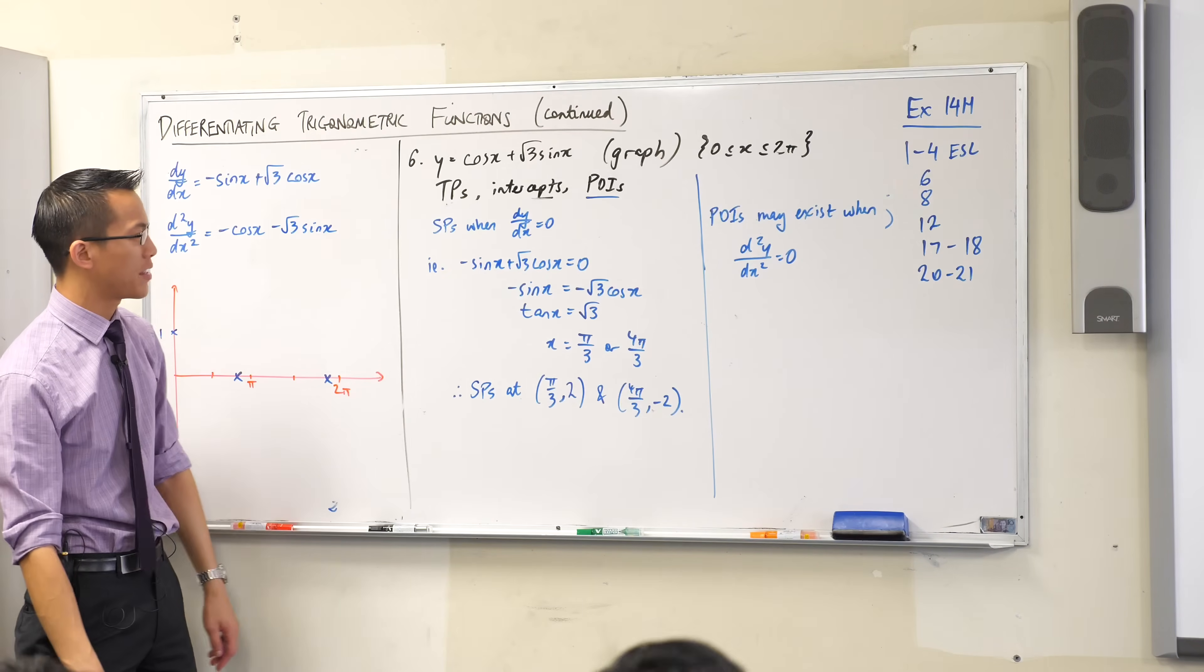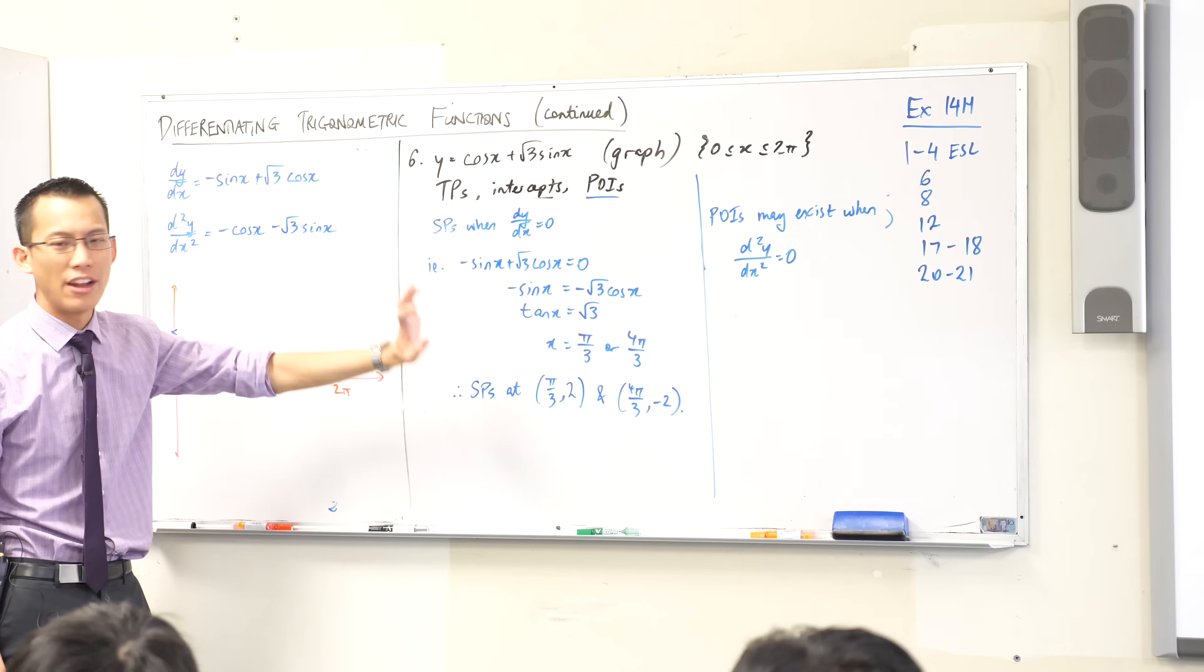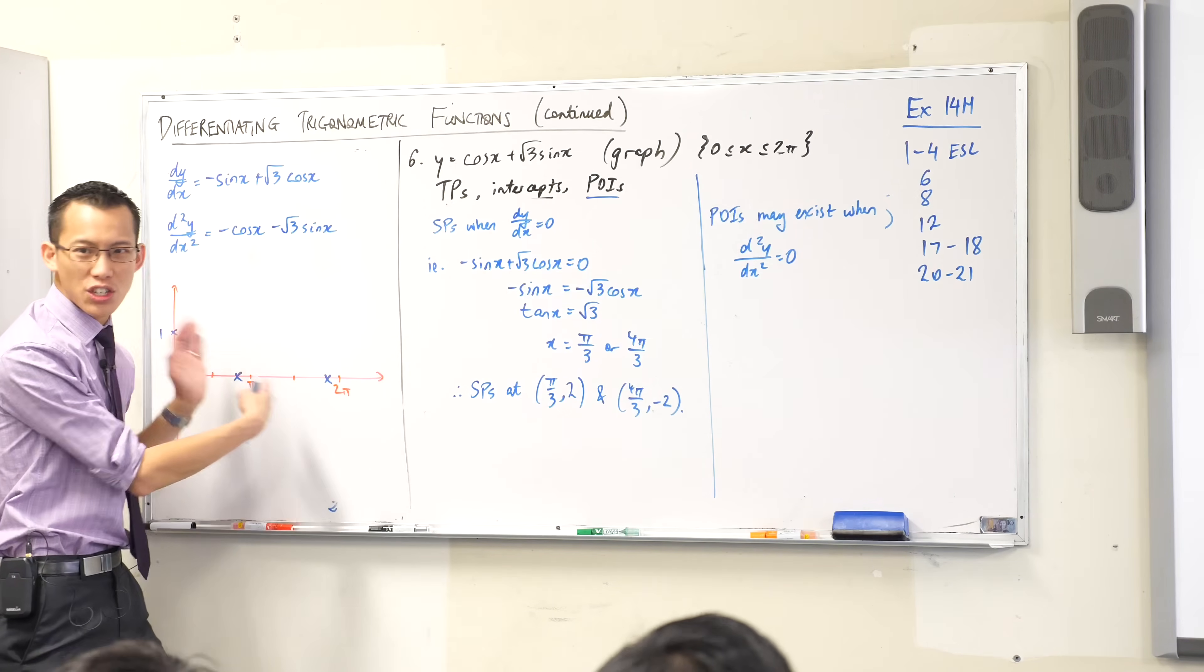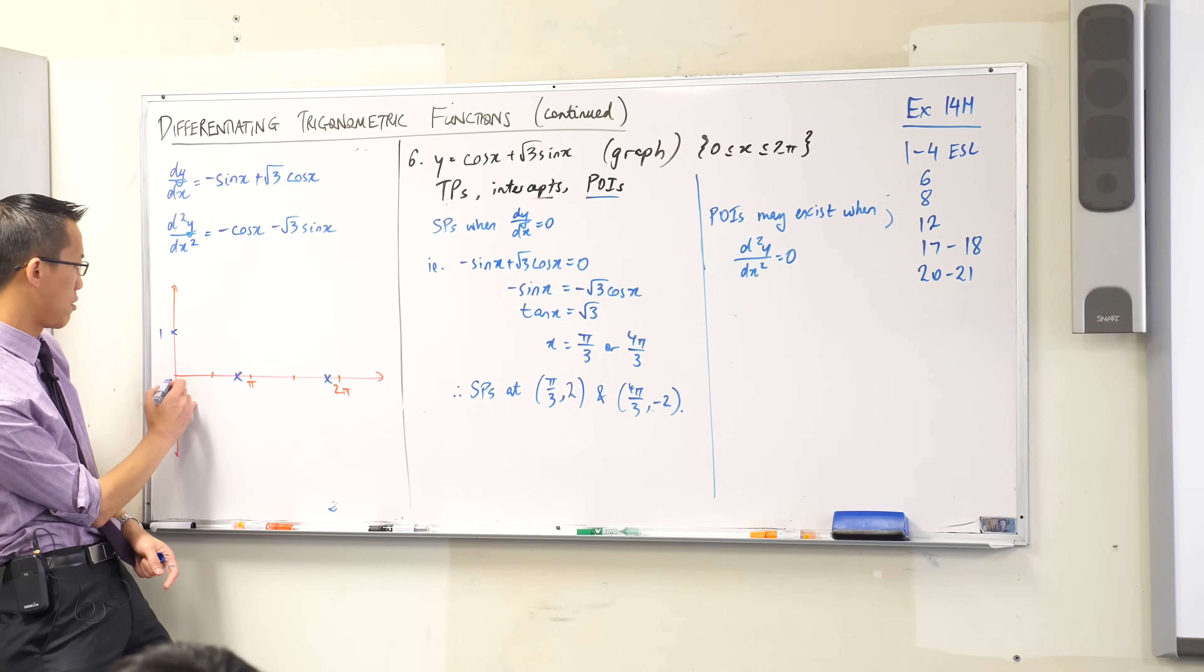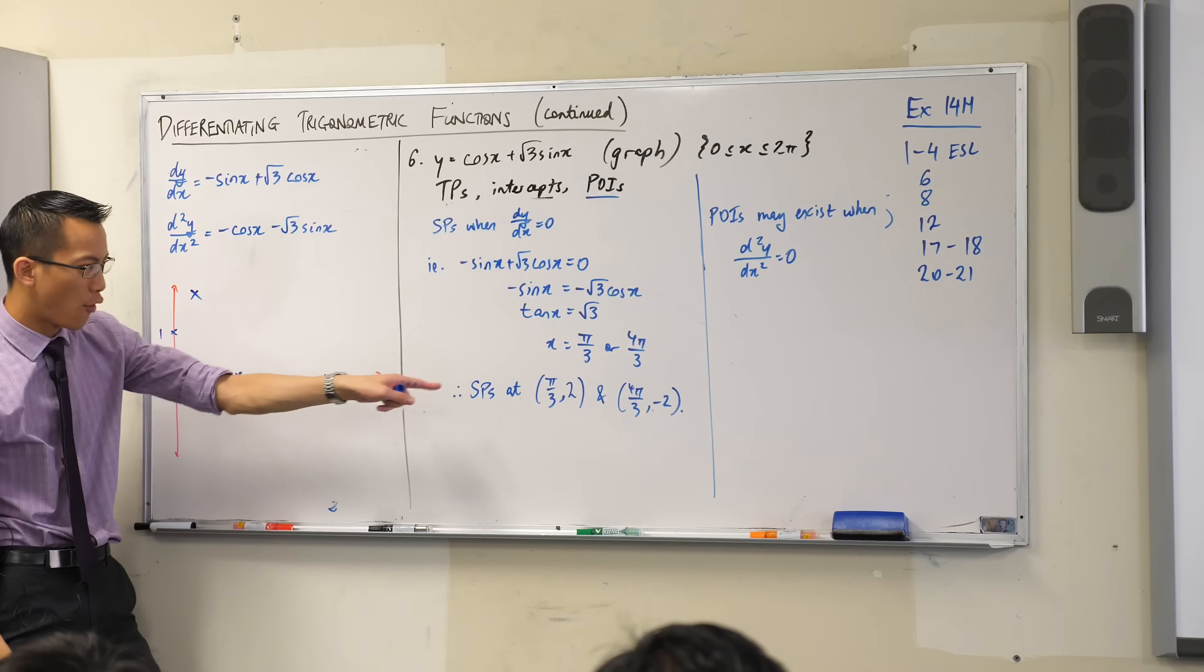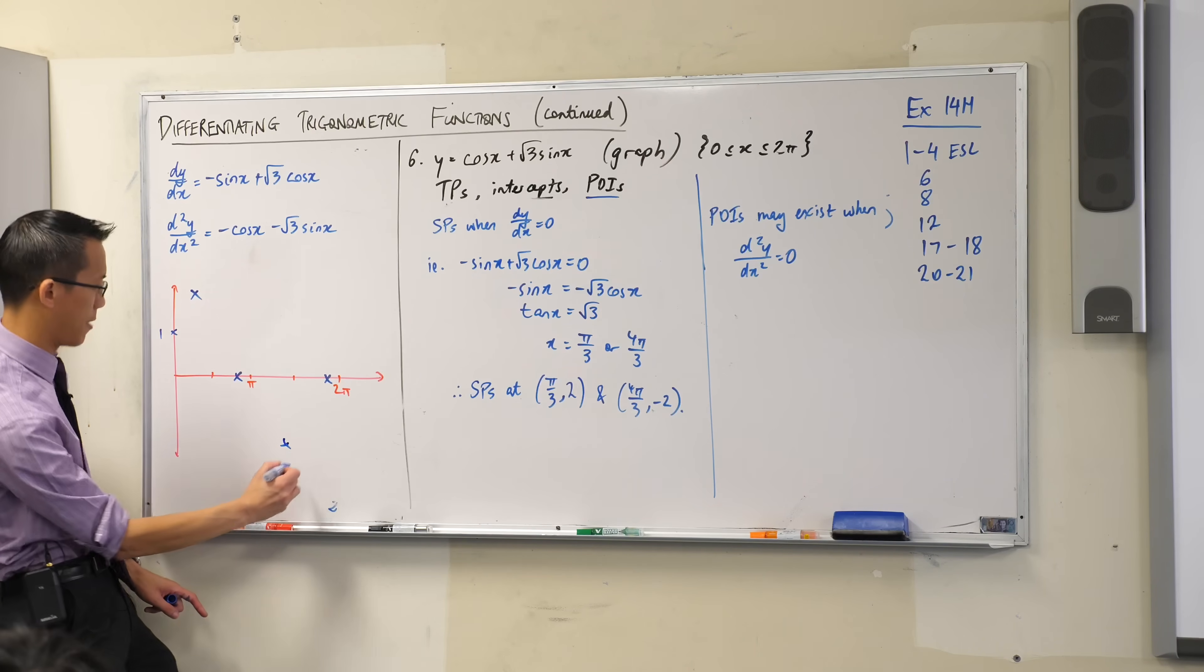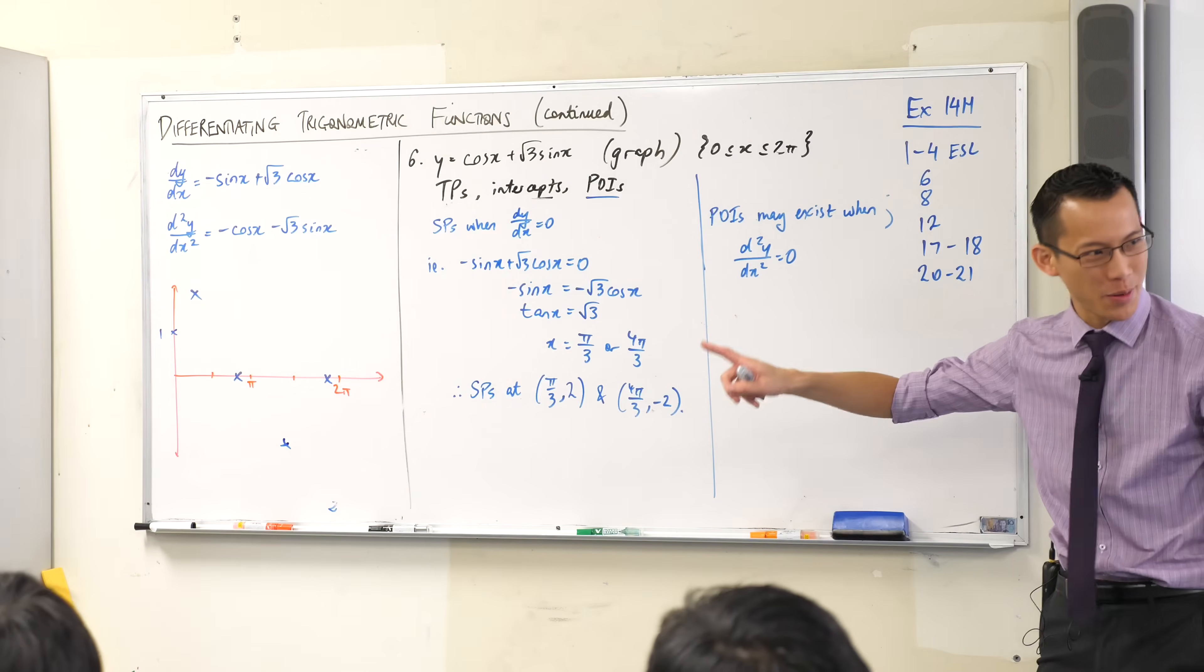And we've found some stationary points because we're differentiating and got this. There's our first derivative, okay? Now, normally I would go through and in fact the question asks you to find the nature of these things. However, because I've just asked you to graph, you're going to get these coordinates. π/3 comma 2 is going to be about here and 4π/3 comma negative 2 is going to be about there. Now, I think you can tell me which one of those is a max and which one is a min because of where they are.